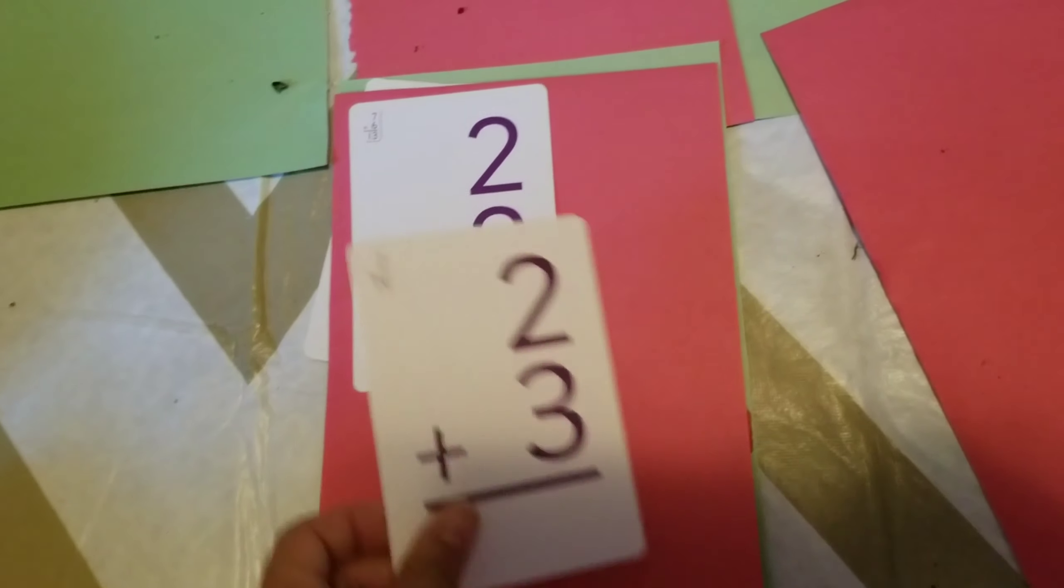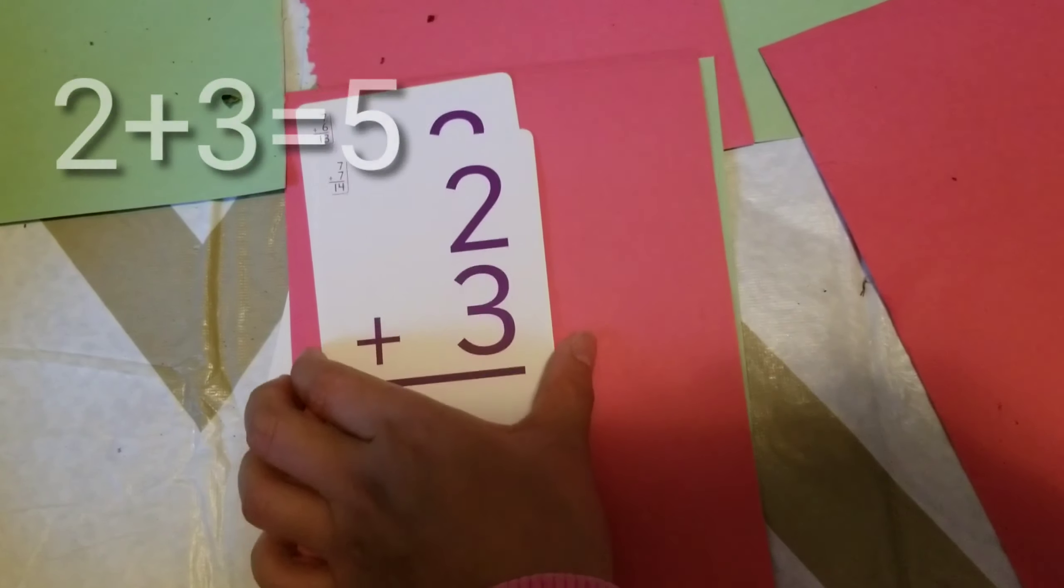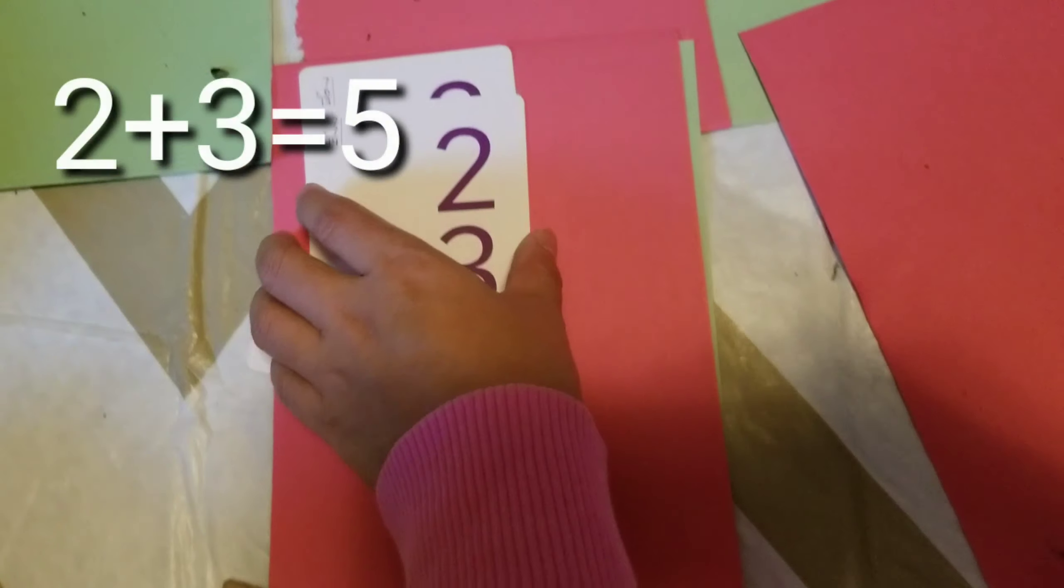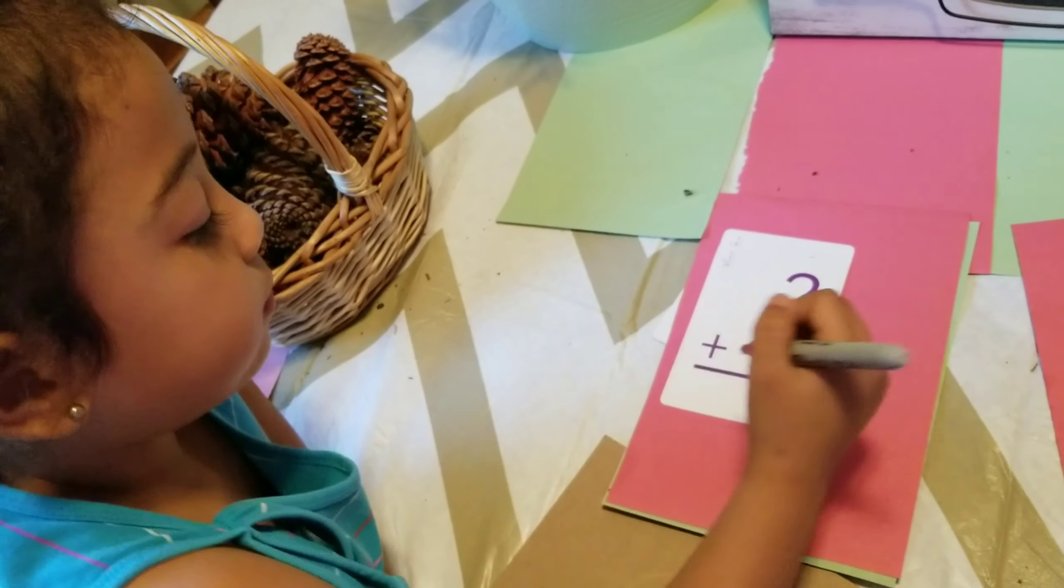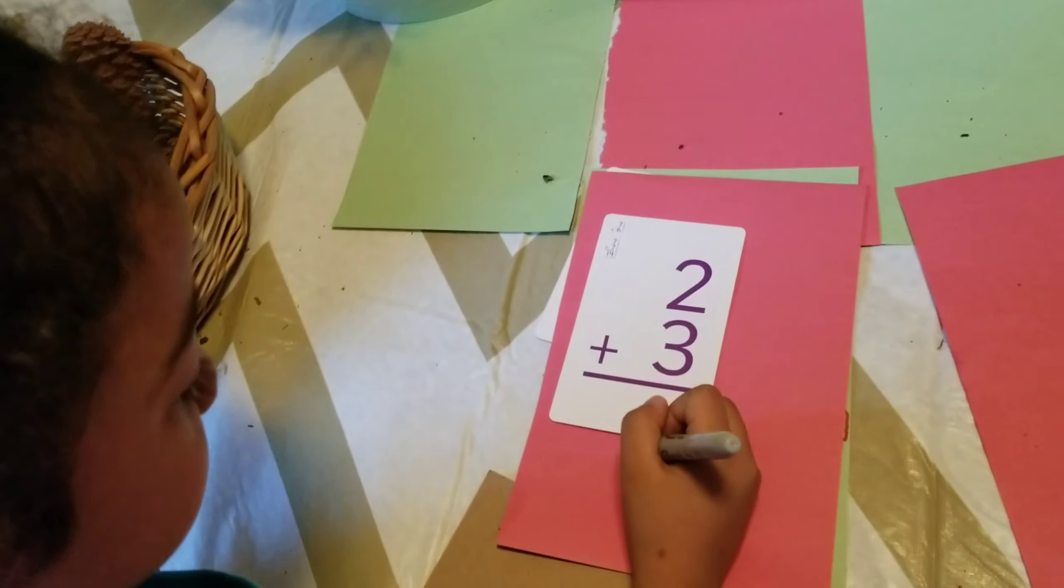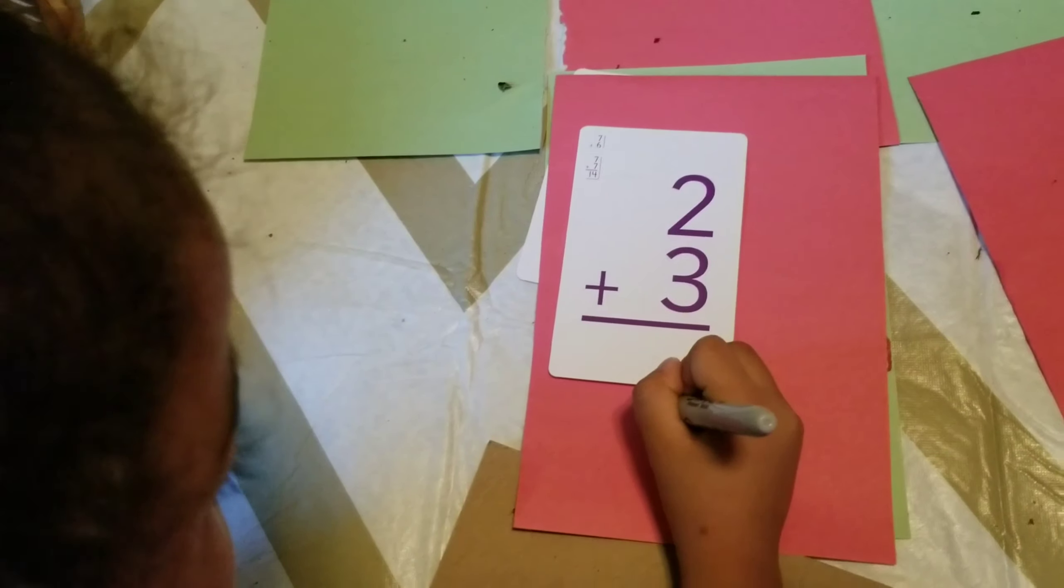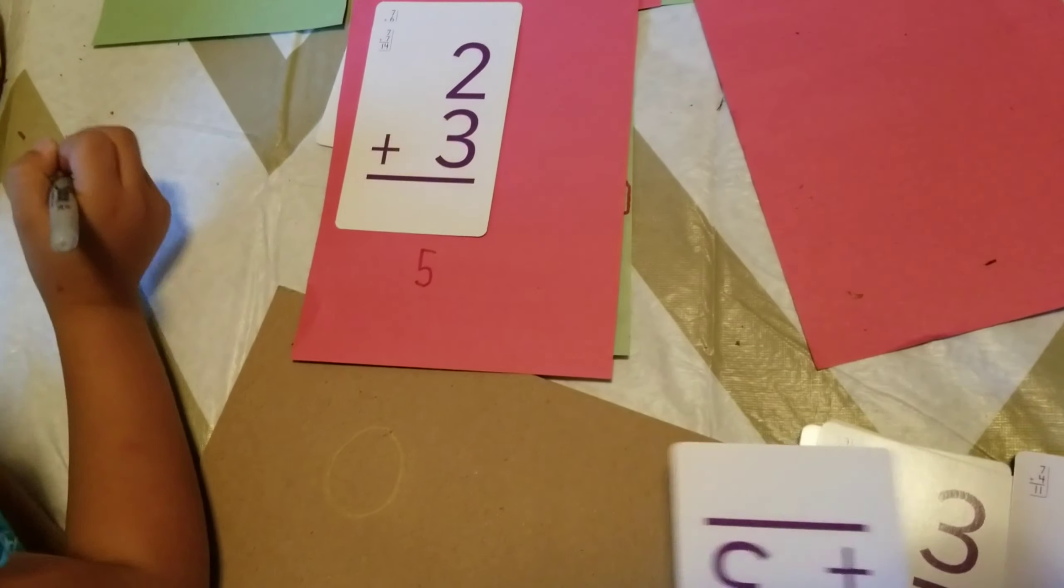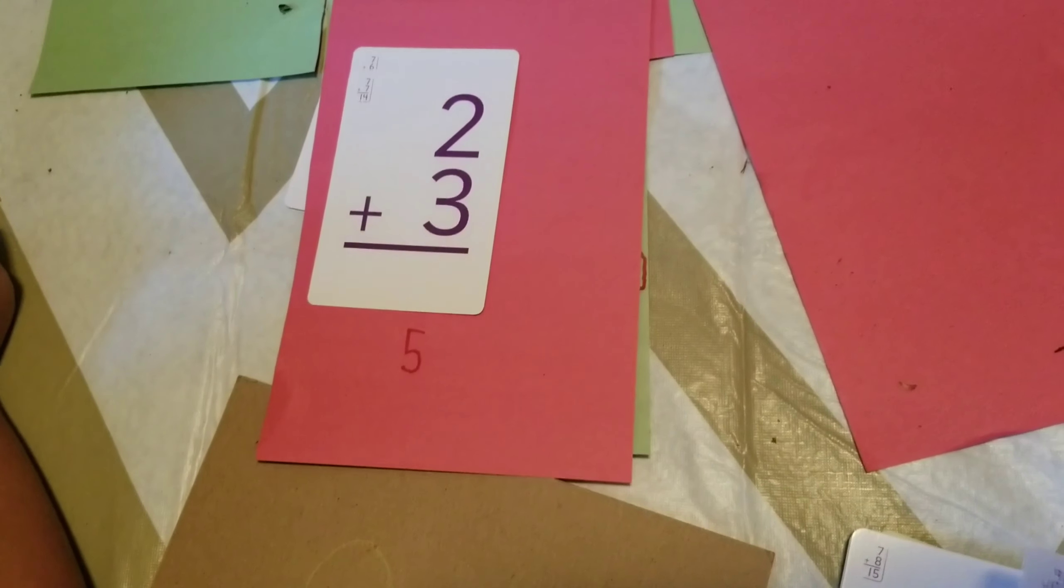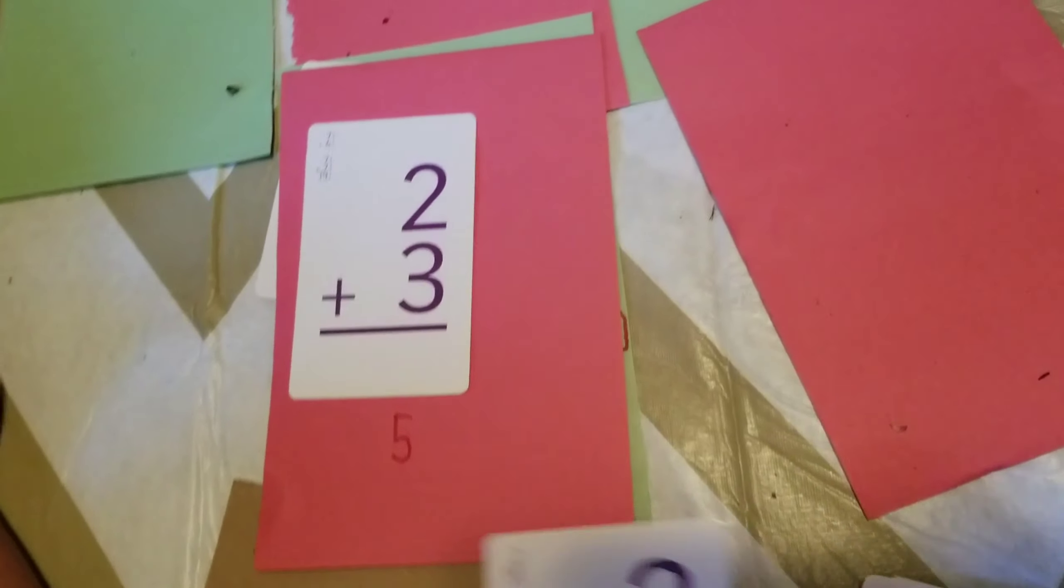I'll have two plus three. What number is that? Five. So two plus three equals what? Five.